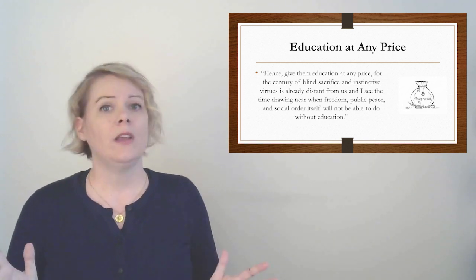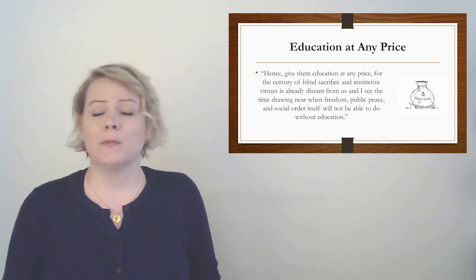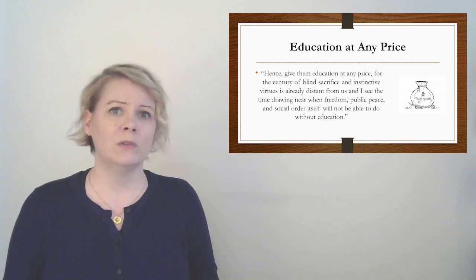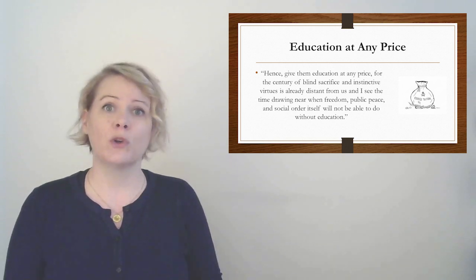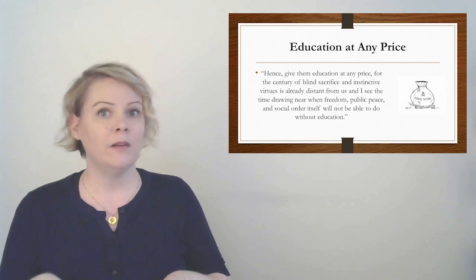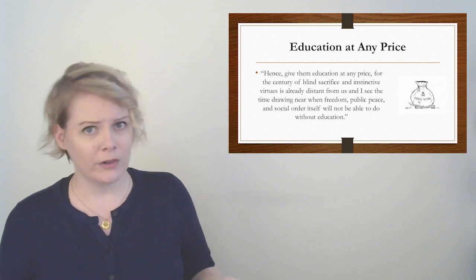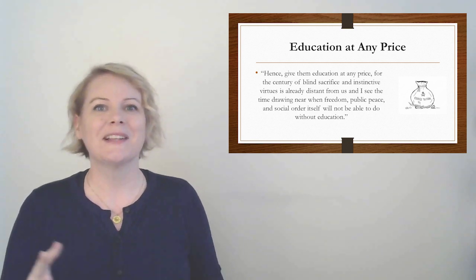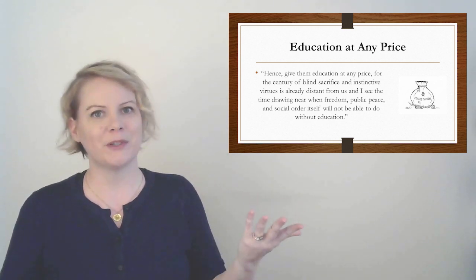So basically, as people are becoming more even, as they're becoming more enlightened, they are also becoming more individualistic. So basically, there's no preventing them from becoming more individualistic. So the question is, how do we tamp that down and still make them okay to survive in society? And he says the key to this is education. Hence, give them education at any price. For the century of blind sacrifice and extinct of virtues is already distant from us. And I see the time drawing near when freedom, public peace, and social order itself will not be able to do without education. So, in short, Americans are getting more self-interested. So they had to figure out a way to prevent that from destroying society. So they managed to sort of combine self-interest and the good of the whole. And if they can just educate people like this, if they can just teach them in schools that the good of the whole and self-interest go together, then it'll be fine.